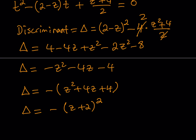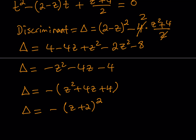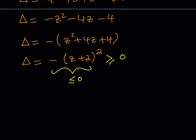If we're looking for real solutions, the discriminant needs to be greater than or equal to 0. But negative (z plus 2) squared is always less than or equal to 0, since (z plus 2) squared is a perfect square. So the intersection of these two conditions means the discriminant must equal exactly 0. Therefore negative (z plus 2) squared equals 0 — this is a must, otherwise we have no real solutions.